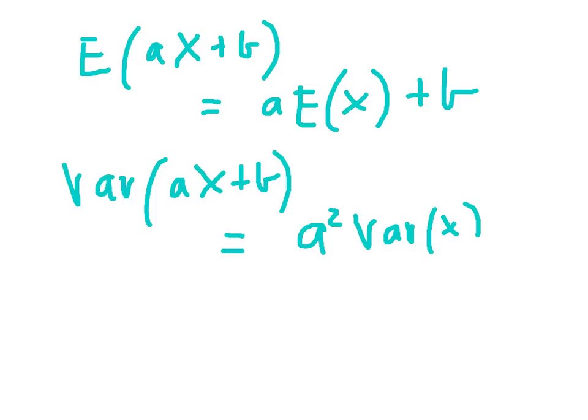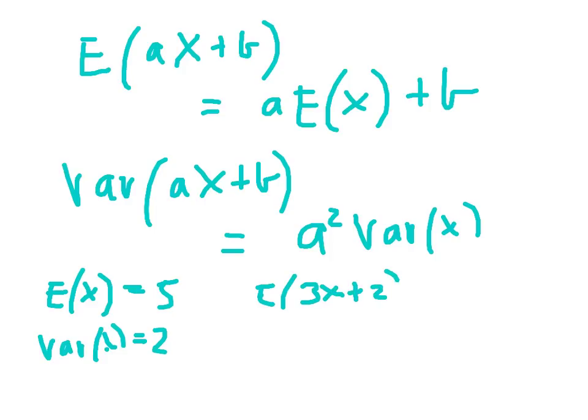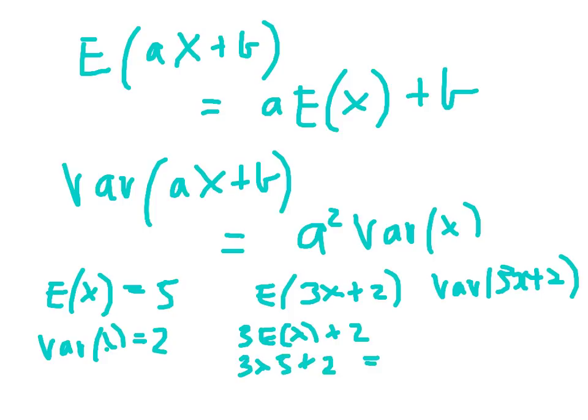But just to simply show you some examples now. Let's suppose that E(x) equaled 5 and Var(x) equaled 2. What is the value therefore of E(3x + 2) and Var(3x + 2)? So applying the rules above, then E(3x + 2) will equal 3 lots of E(x) plus 2. We already know that E(x) is 5, so we're going to get 3 times 5 plus 2, which gives me 17. And the variance will be 3² Var(x). We know that the variance was 2, so we're going to have 9 times 2. And the answer will be 18.